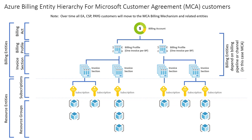Now let's look at the Microsoft Customer Agreement entity hierarchy. Microsoft is improving the Azure purchase experience for all users by introducing the Microsoft Customer Agreement or MCA as the primary way to purchase Azure for all customers, including over time EA customers. It allows for pay as you go purchasing with no upfront commitment. The Microsoft Customer Agreement is a simplified, fully digital, non-expiring contract that enables you to start using products and services faster and delivers enhanced billing and cost management capabilities.